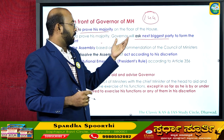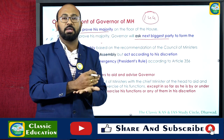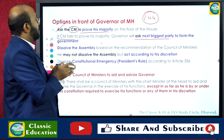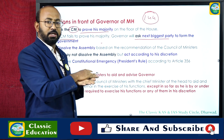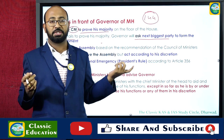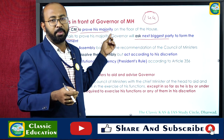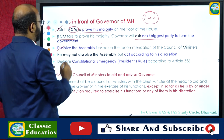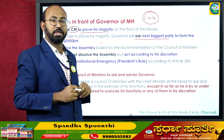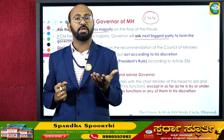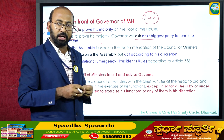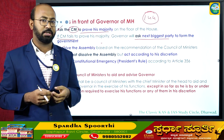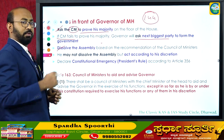Currently, NCP, INC, with the support of Samajwadi Party and others, are ruling the state. If the Maha Vikas Aghadi fails to prove majority, the next biggest party — the BJP — may be asked by the Governor to form the government. The Governor may also dissolve the assembly based on the recommendation of the council of ministers headed by the Chief Minister, and call for fresh elections.